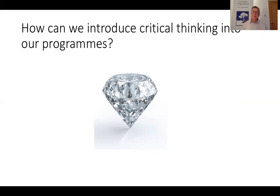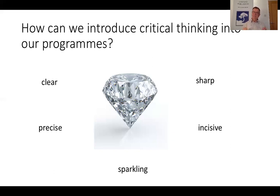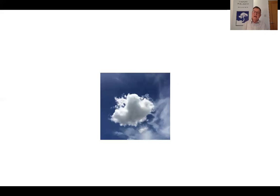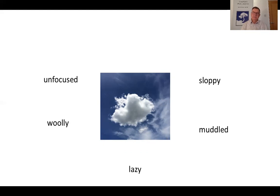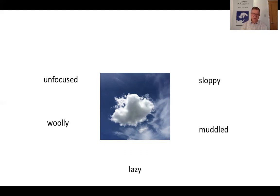I like to use the image of a diamond because it represents the type of thinking we want our students to engage in. Diamonds are precise, sharp, incisive, sparkling, and clear — this is the type of thinking we should be aiming for. As opposed to woolly thinking, which is probably what we do most of the time: unfocused, sloppy, even muddled or lazy thinking. So how do we go from that to the sharp, precise thinking we're aiming for?